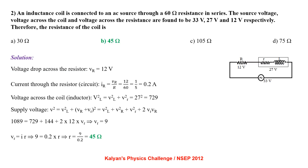An inductance coil is connected to an AC source through a 60 ohm resistance in series. The source voltage, voltage across the coil and voltage across the resistance are found to be 33V, 27V and 12V respectively. Therefore, the resistance of the coil is.